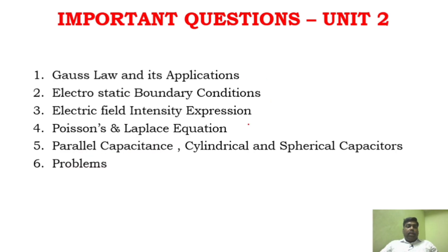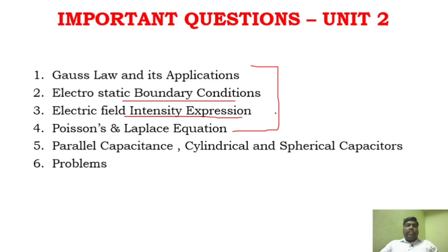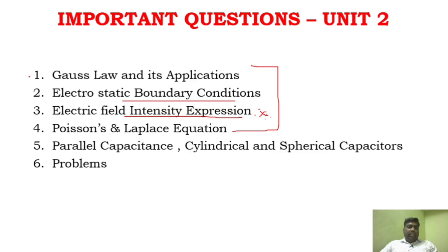For Unit 2, you will have a lot of concepts to study. But you don't need to study everything — concentrate on 4 to 5 key areas, both theory and problems. Gauss's law and its applications, electrostatic boundary conditions, and electric field intensity expression are very very important. Also go through Poisson's and Laplace equations, and parallel, cylindrical, and spherical capacitors. If you concentrate well on these areas, you can definitely answer at least one question.